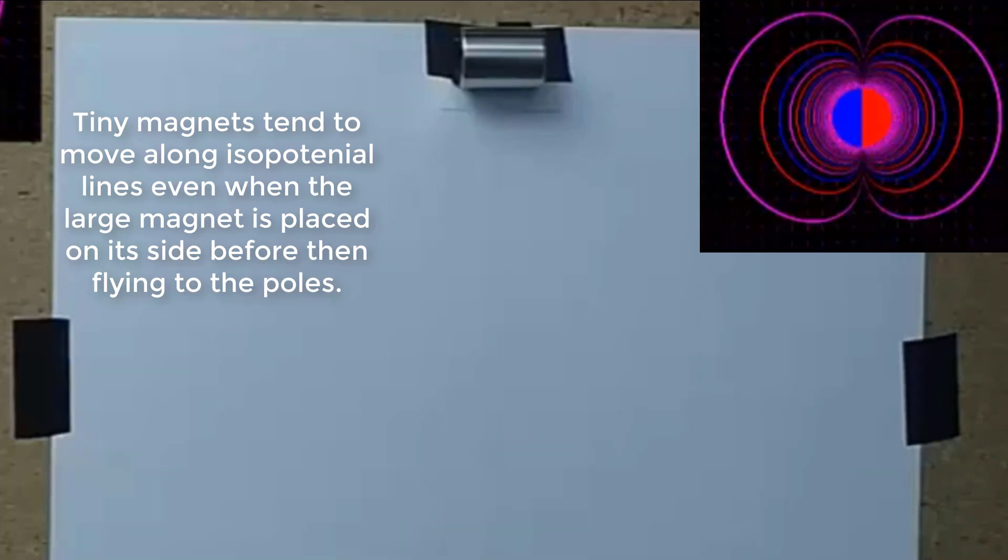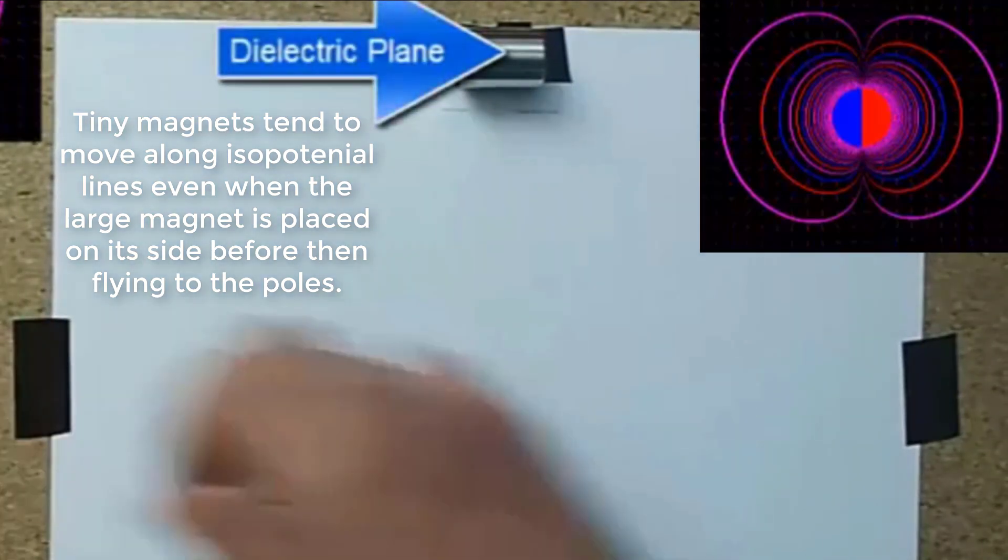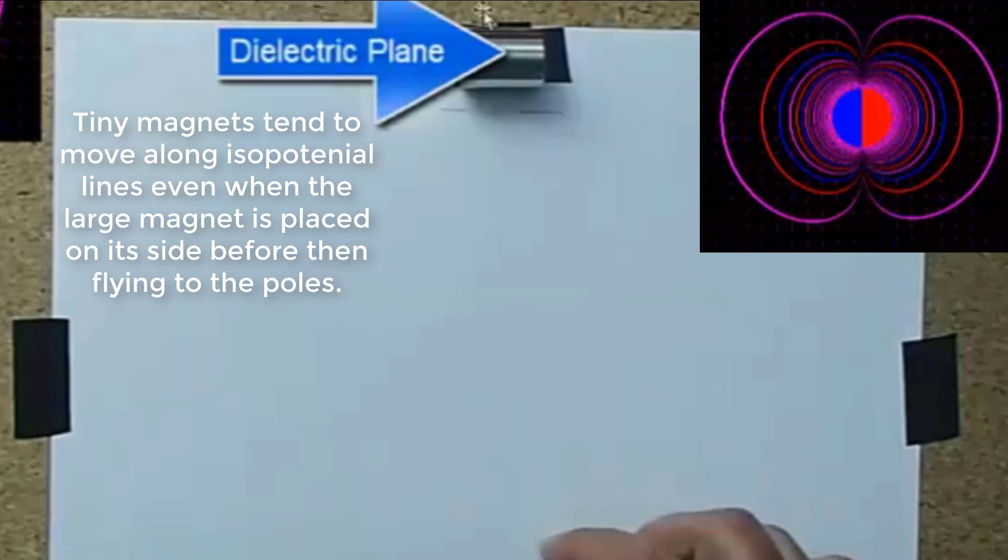Tiny magnets tend to move along isopotential lines even when the large magnet is placed on its side before then flying to the poles.